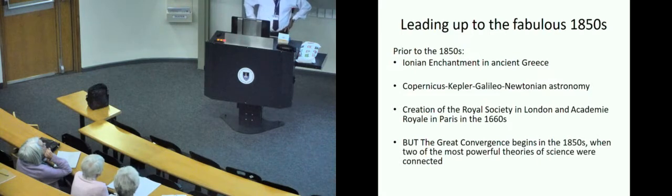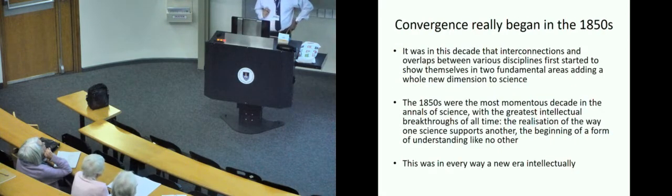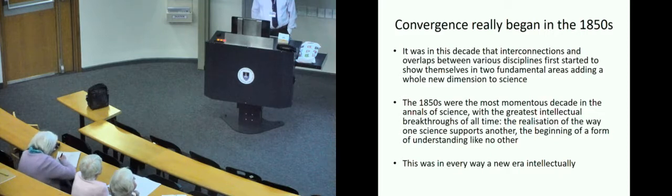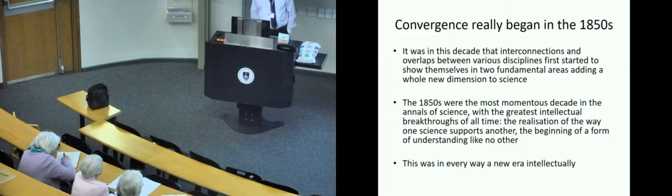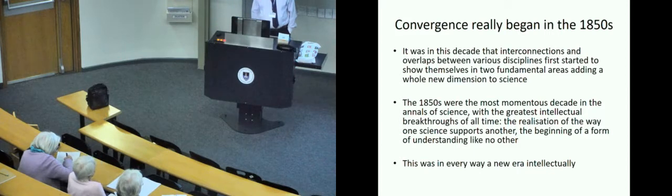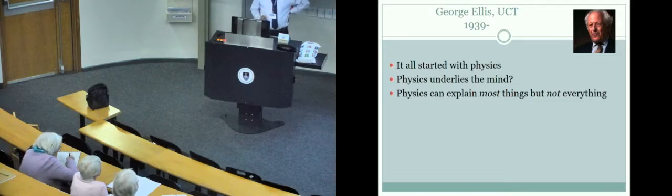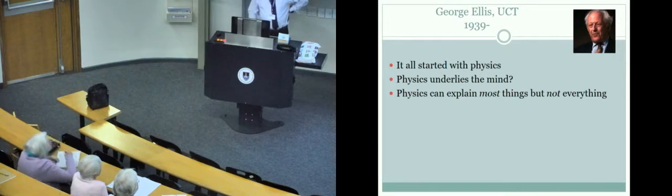Prior to the 1850s, there were a lot of great minds that walked this earth. We had the Ionian enchantment in ancient Greece, Copernicus, Johannes Kepler, Galileo Galilei, and Newtonian astronomy. Then the Royal Society was created in the 1660s. But the great convergence begins in the 1850s, when two of the most powerful theories of science were connected. The 1850s were the most momentous decade in the annals of science. Our own George Ellis says it all started with physics. Physics underlies the mind. Physics can explain most things but not everything.